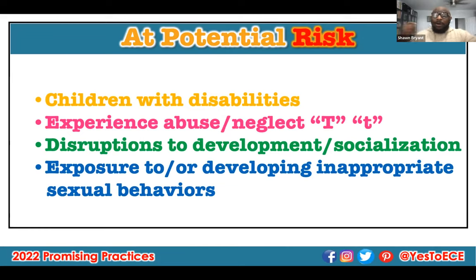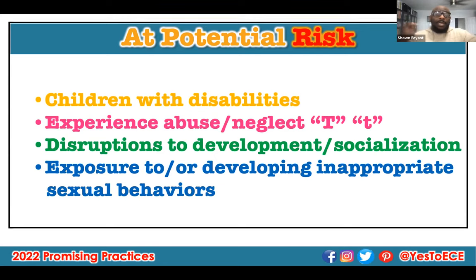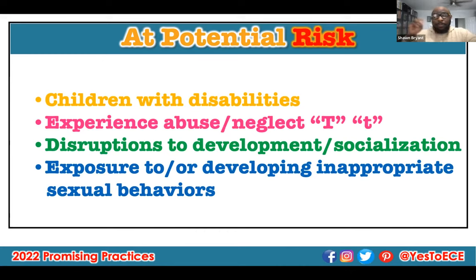As adults, it's our role and responsibility to always know that children with disabilities are oftentimes at risk. We also know that children who've experienced abuse and neglect — what I like to call big T and small T trauma across that continuum — because what may be a small T for me maybe a big T for someone else. It's highly individualized, but when children experience abuse and neglect, it puts them at higher risk in terms of healthy sexual development.